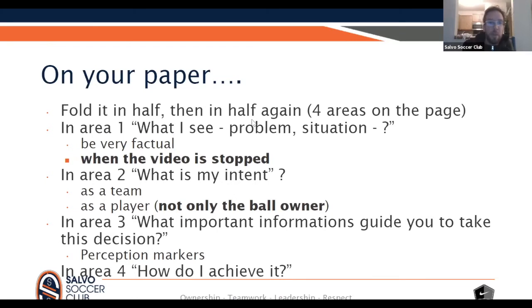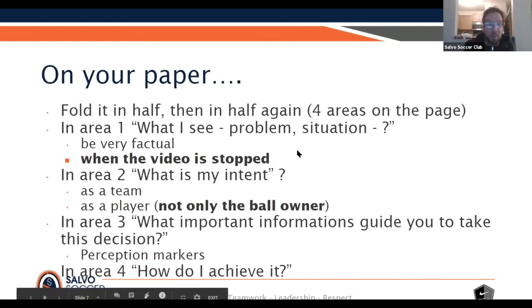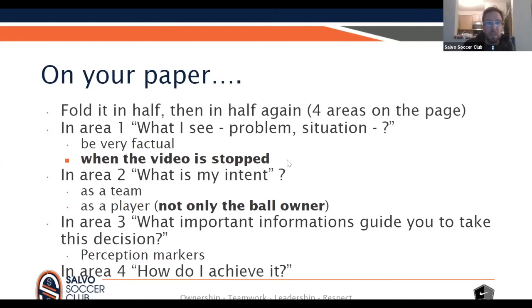The second part will be: based on what you see, what is your intent? What is your intent as a team, and also as a player - not only the ball owner, but all the other players on the screen and what you think they should do. So what is your intent? After that, the third part: what important information did you use to take this decision? Why did you make the decision? Why did you want to do this intent? What important information made you decide that?